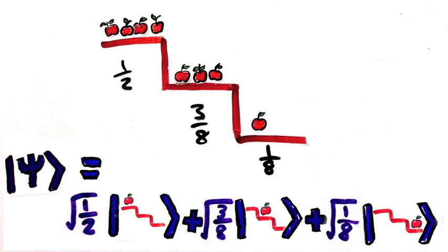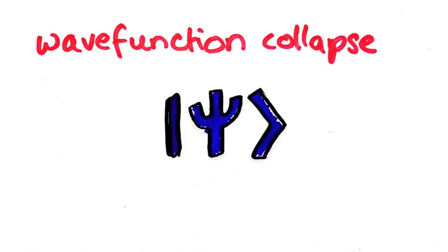There's one other aspect of the measurement rule, that measurement causes the wavefunction to collapse.